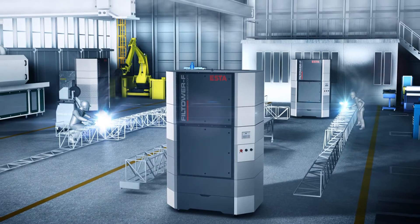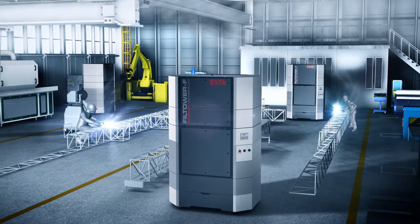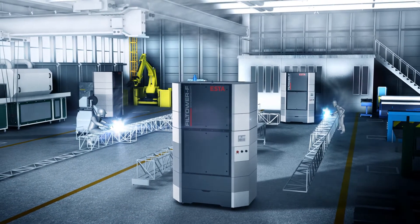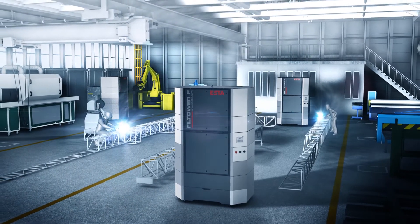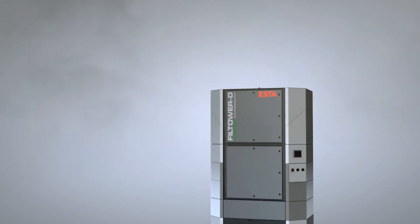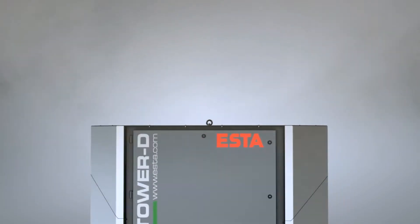The systems are available in three performance levels from 10,000 cubic meters per hour to 20,000 cubic meters per hour, suitable for all hall sizes. The Fieldtower systems work according to the principle of layer ventilation.